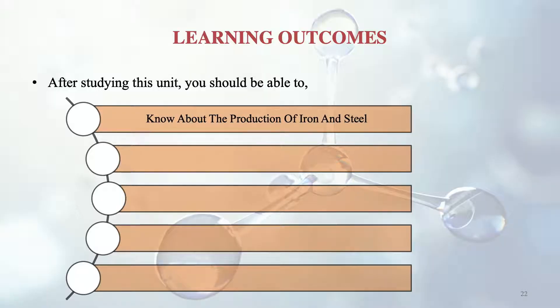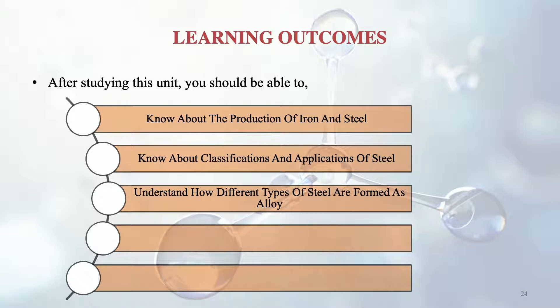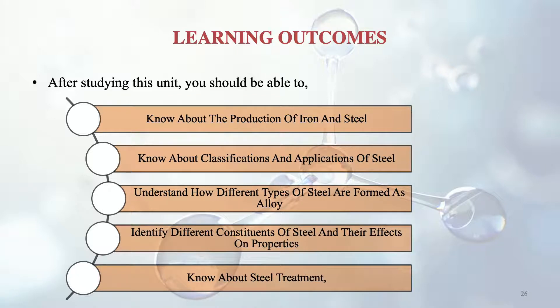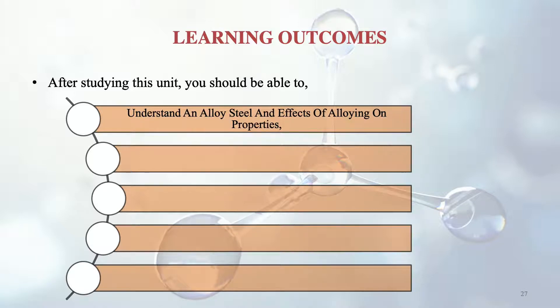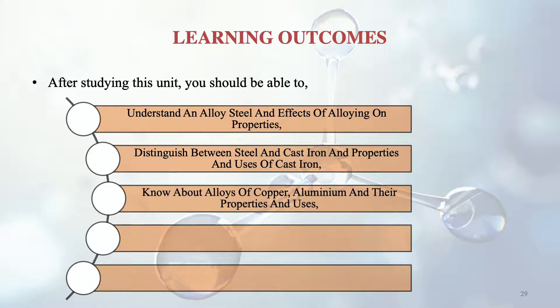The objectives of this unit are: to know about the production of iron and steel; to know about the classifications and applications of steel; to understand how different types of steel are formed as alloys; to identify different constituents of steel and the effects of alloying on properties; to know about steel treatment; to distinguish between steel and cast iron; to know about alloys of copper, aluminium and their properties; and to identify bearing materials and creep resistant materials.